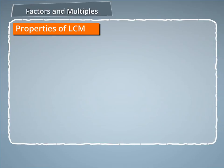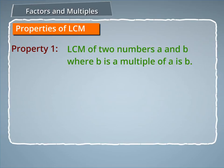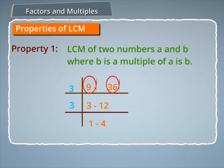Some properties of LCM: Property 1 — the LCM of two numbers A and B, where B is a multiple of A, is B. For example, for 9 and 36, the LCM is 3 × 3 × 4 = 36.